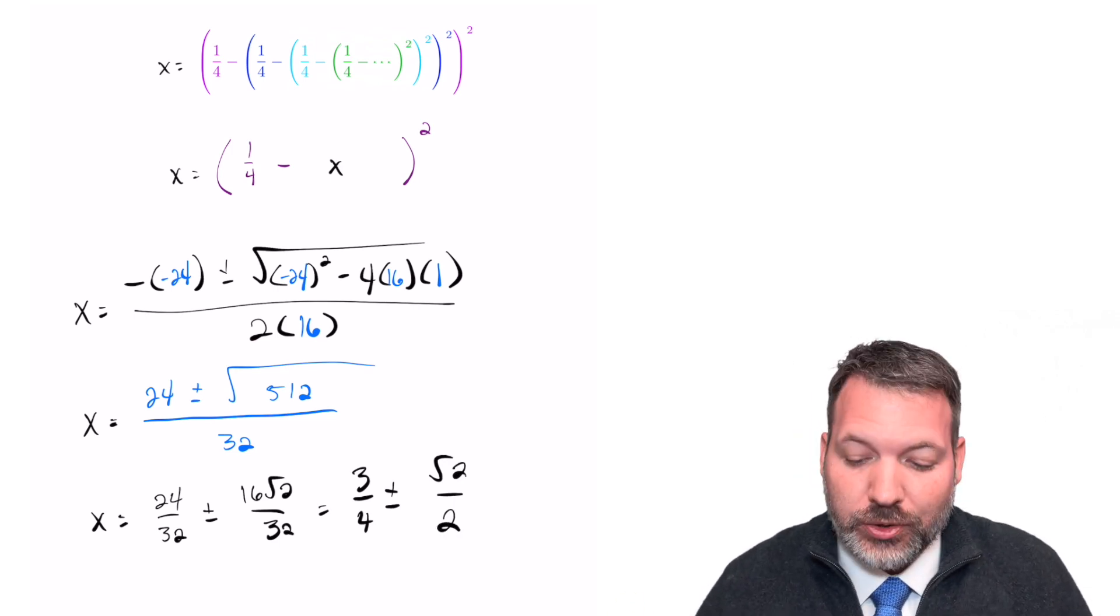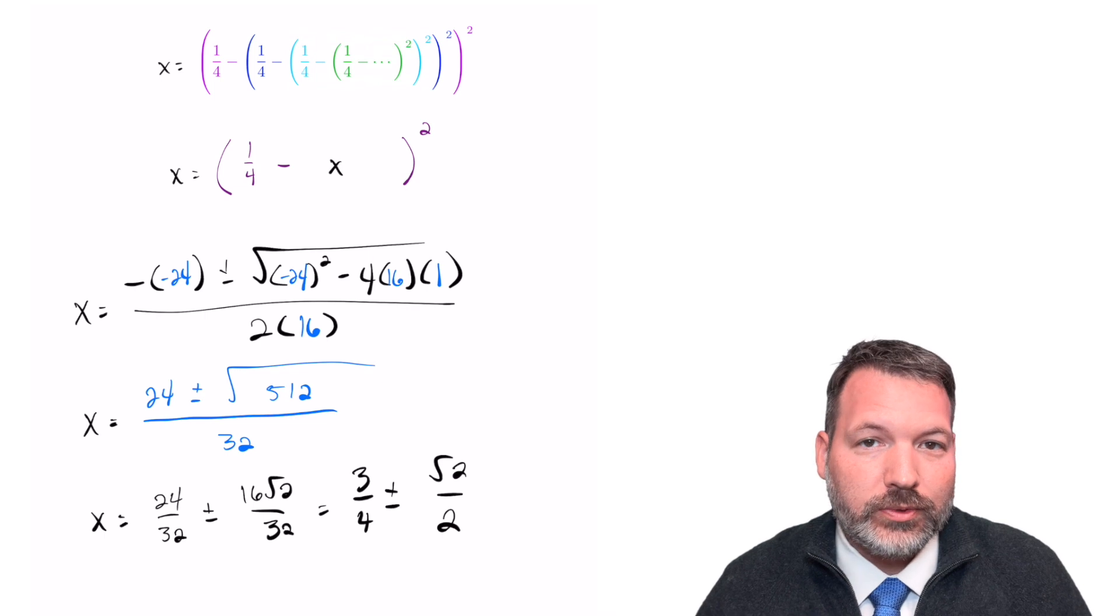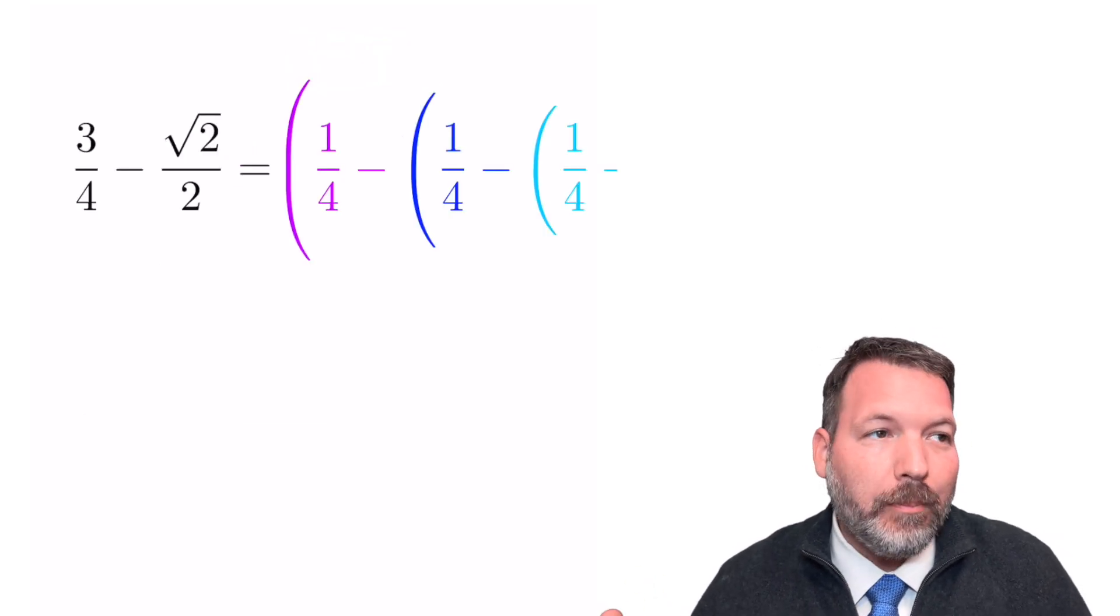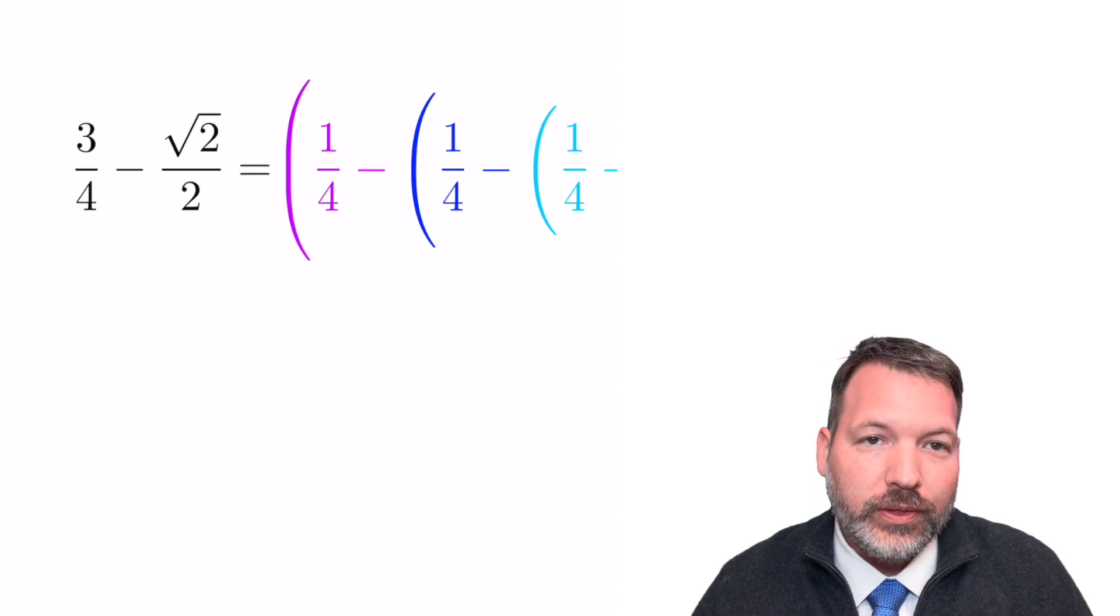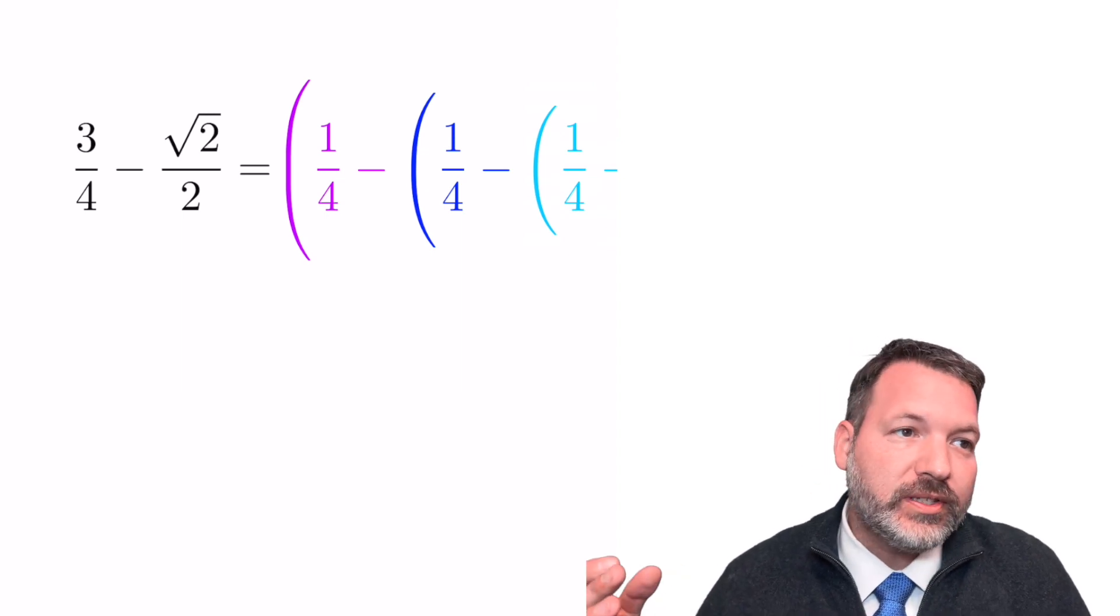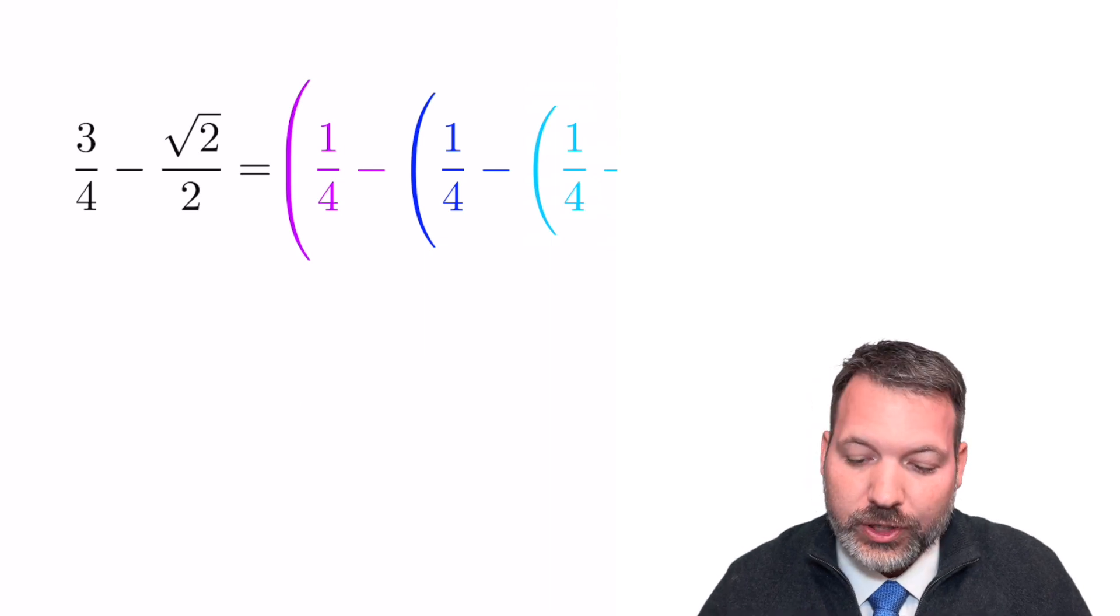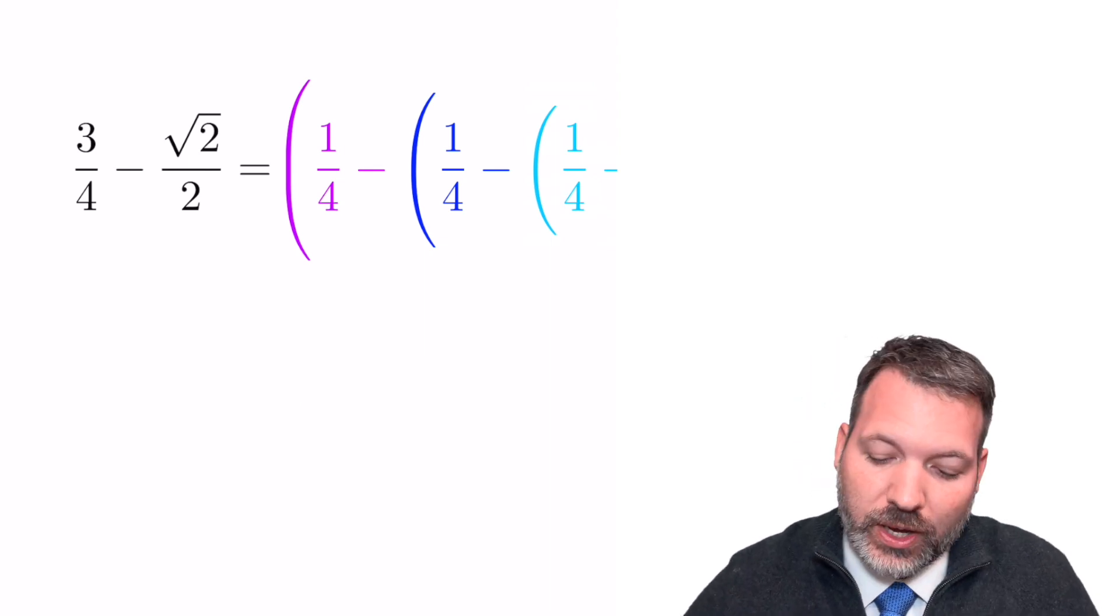Now, the plus or minus means this series could actually have two different values. Remember, the one we were interested in showing it was equal to was three-fourths minus the square root of 2 over 2. The two different values relate to when this series could be expected to converge and when it could be expected to diverge. But for our quick and dirty purposes, we are done.